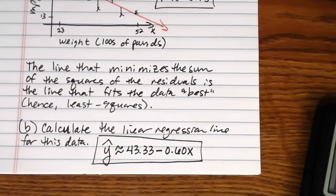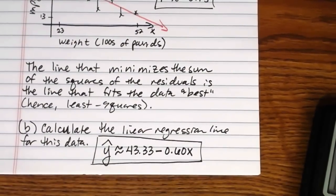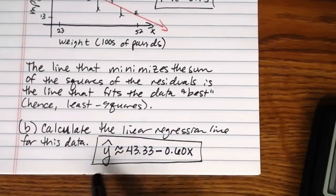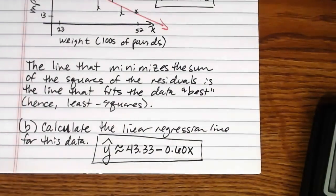What can we do with this? Couple of things. We can interpret the slope and the intercept in the context of the problem, we'll talk about that, and then we can also use this line to make predictions. So we'll talk about that as well in the next video.